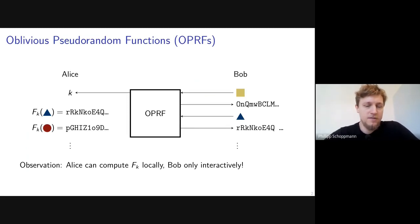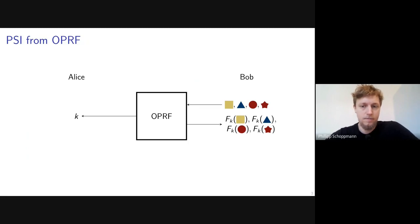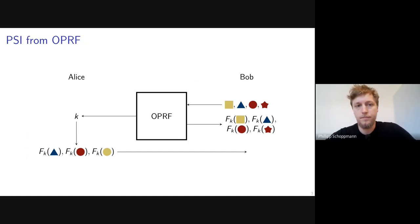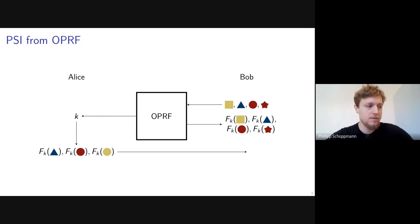How can we use OPRFs to build PSI protocols? The approach is quite simple. Bob inputs all his elements into the OPRF protocol and gets the corresponding PRF values. Alice gets the OPRF key and locally computes PRF values for all of her inputs. She then sends those in shuffled order to Bob, who compares each one with his own OPRF values. A match means the corresponding input is in the intersection. The work presented here follows this same approach but builds a more efficient OPRF.